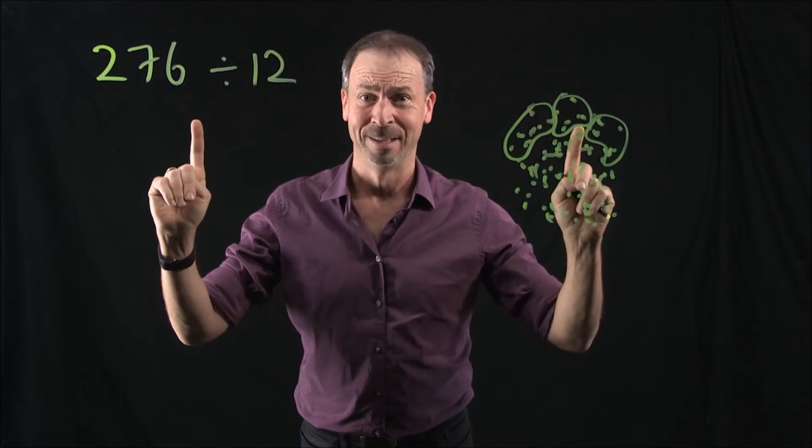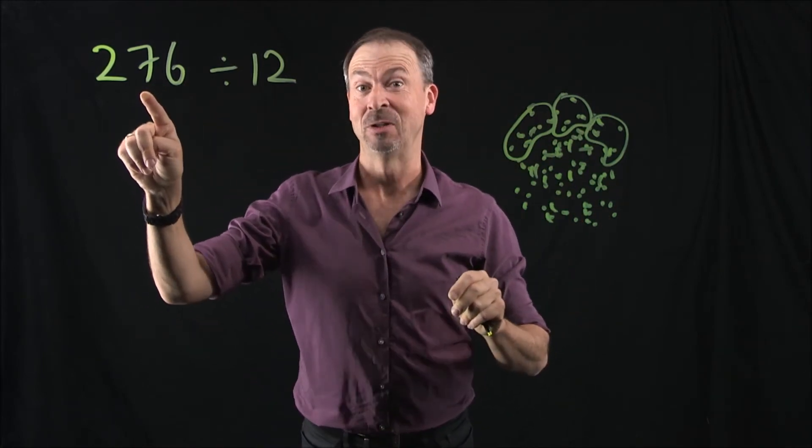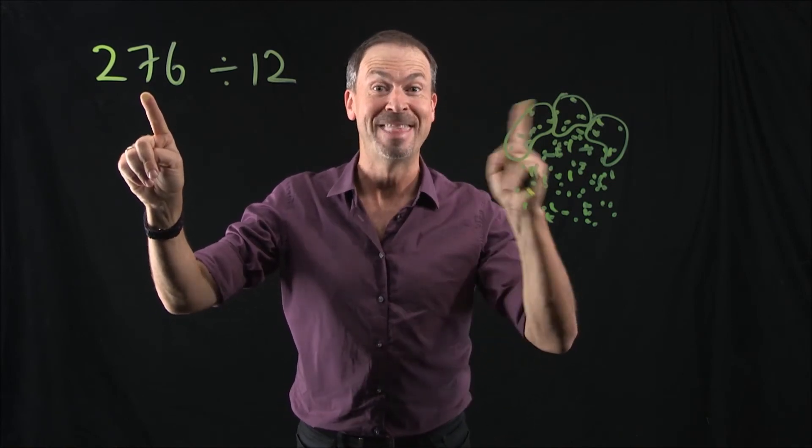There's got to be a better way. Well, the answer is yes. We could actually draw a much more efficient picture of 276. Namely, we could draw 276 in a 1-to-10 machine.